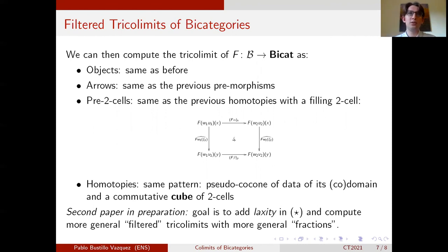And this leads us to compute a much larger family of tricolimits in bicats. And then, by trying to generalize the notion of calculus of fractions to a notion where you have a distinguished family of arrows and a distinguished family of two cells, we hope that we can compute a much larger family of filtered tricolimits of bicategories. And this much larger family would, in particular, englobe the family of all tricolimits of bicategories that would commute with finite tricolimits of bicategories.